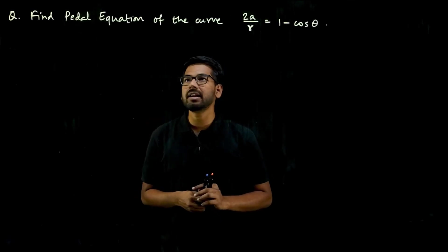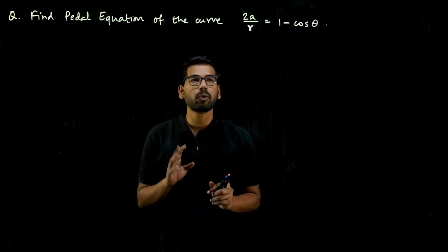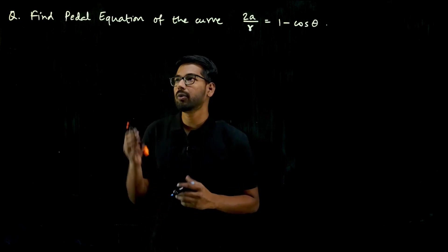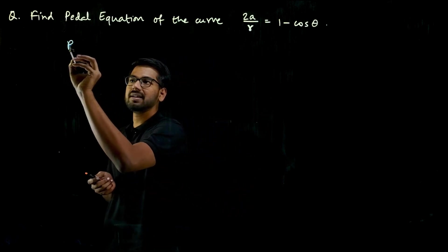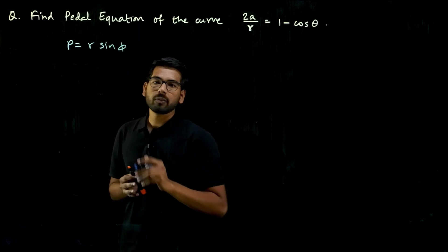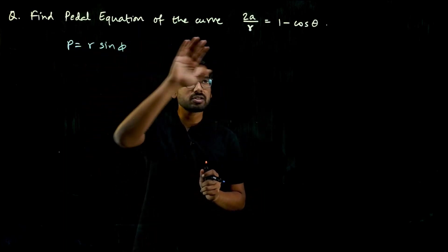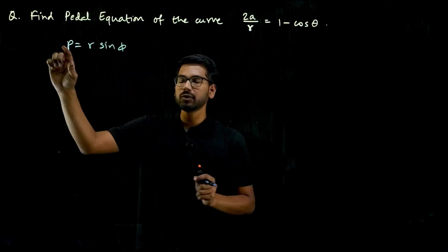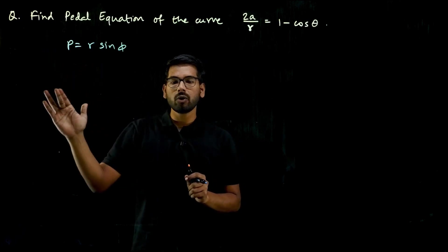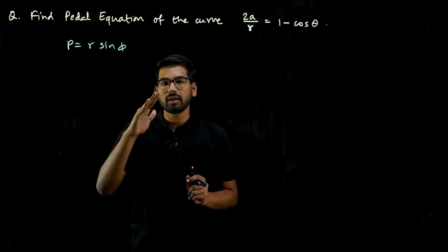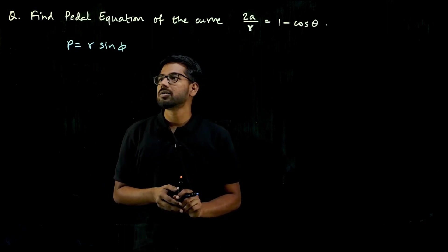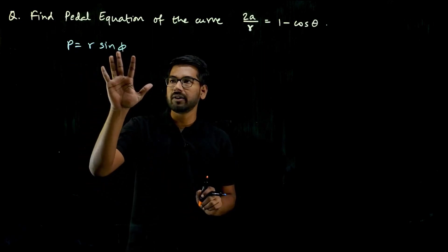The next question is to find the pedal equation of the polar curve 2a/r = 1 - cos θ. The pedal equation is p = r sin φ, which is the same equation of the polar curve expressed in terms of p, where p is the perpendicular distance from the origin to the tangent at the point (r, θ).